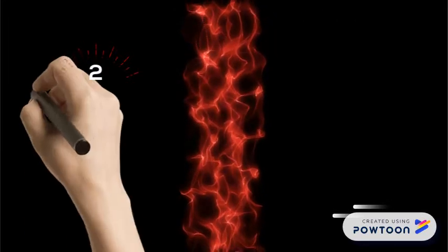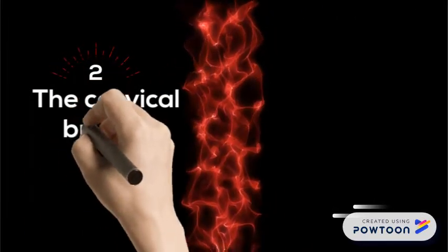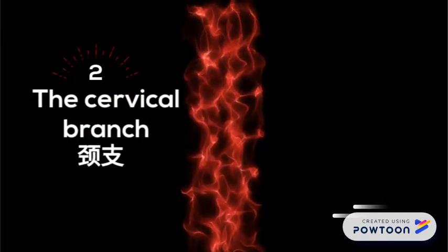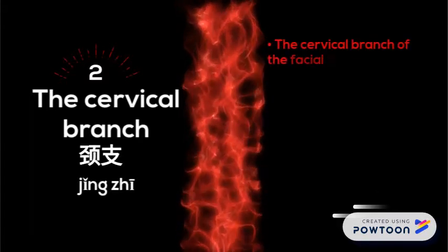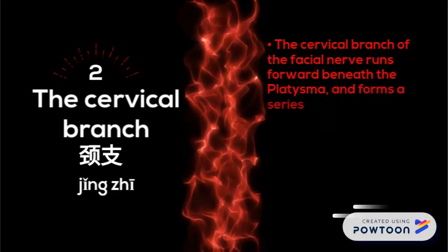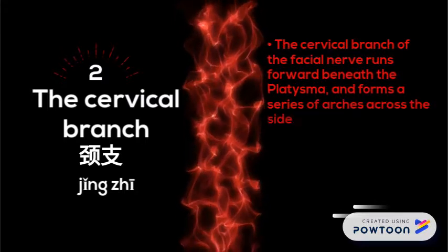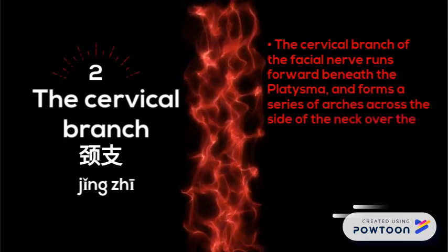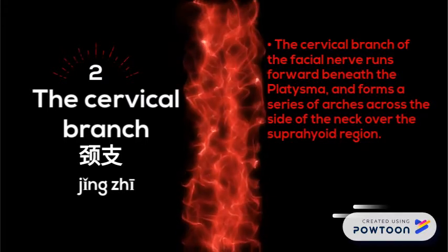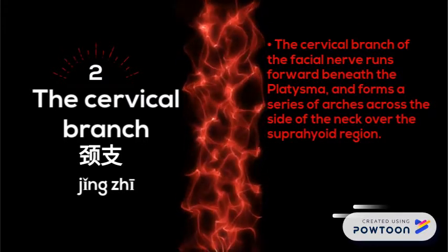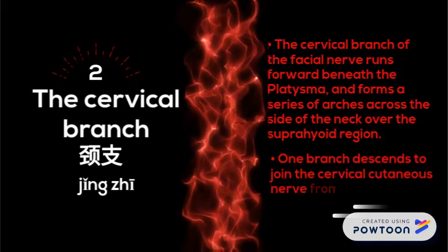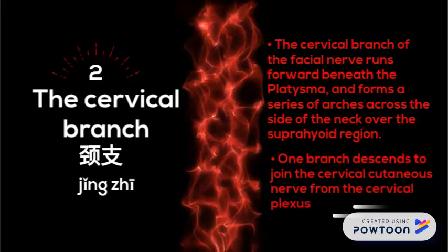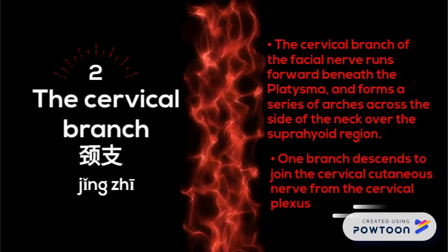Next is the cervical branch, jing zhi. The cervical branch of the facial nerve runs forward beneath the platysma and forms a series of arches across the side of the neck over the supra-hyoid region. One branch descends to join the cervical cutaneous nerve from the cervical plexus.